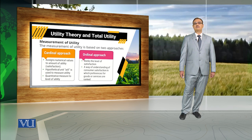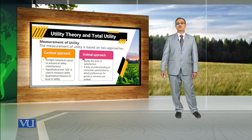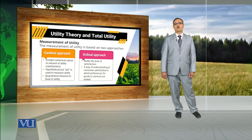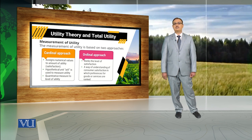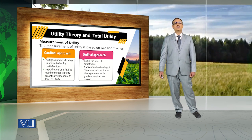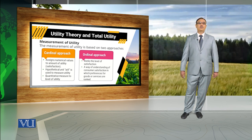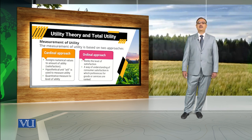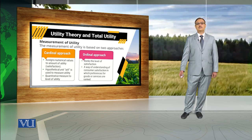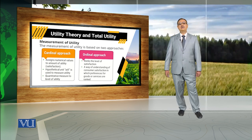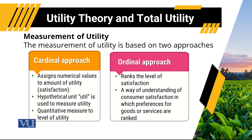Sometimes we rank the consumer on the basis of the utility that someone is getting against different combinations of commodities. For example, if someone is using one unit of apple and one unit of orange, the consumer might say he is getting more satisfaction from apples compared to oranges. Under the ordinal approach, we basically order the utility from different combinations. Earlier economists assumed utility is independent — the utility from apples does not depend on the utility from oranges.